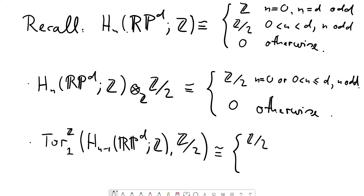Z/2 occurs in the Tor term whenever we had a Z/2 in H_{n-1}(RP^d; Z), which was for 0 < n-1 < d with n-1 odd, i.e., n even. Adding 1 throughout, this is equivalent to 1 < n < d+1, or equivalently 1 ≤ n ≤ d with n even. In all other cases — free, projective, or zero modules — the Tor term is 0.